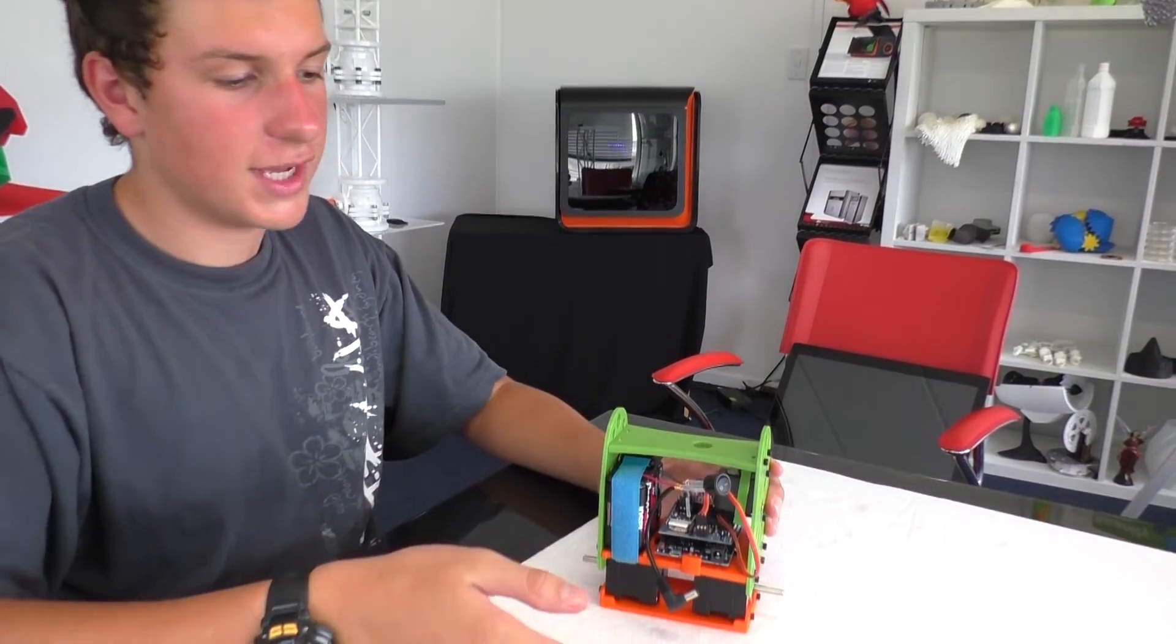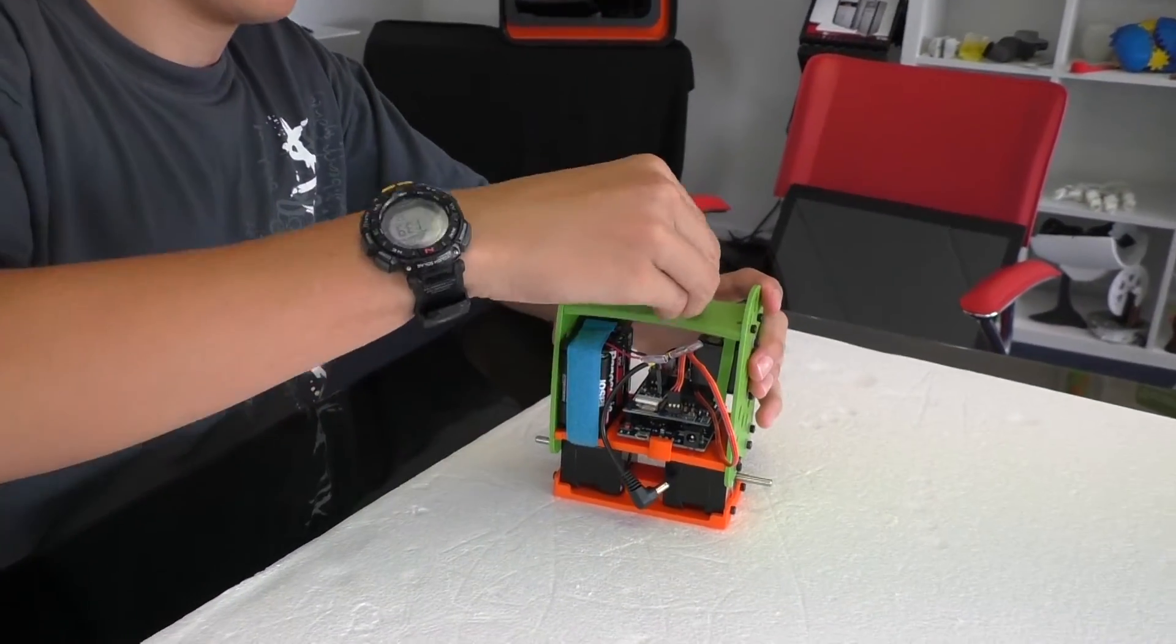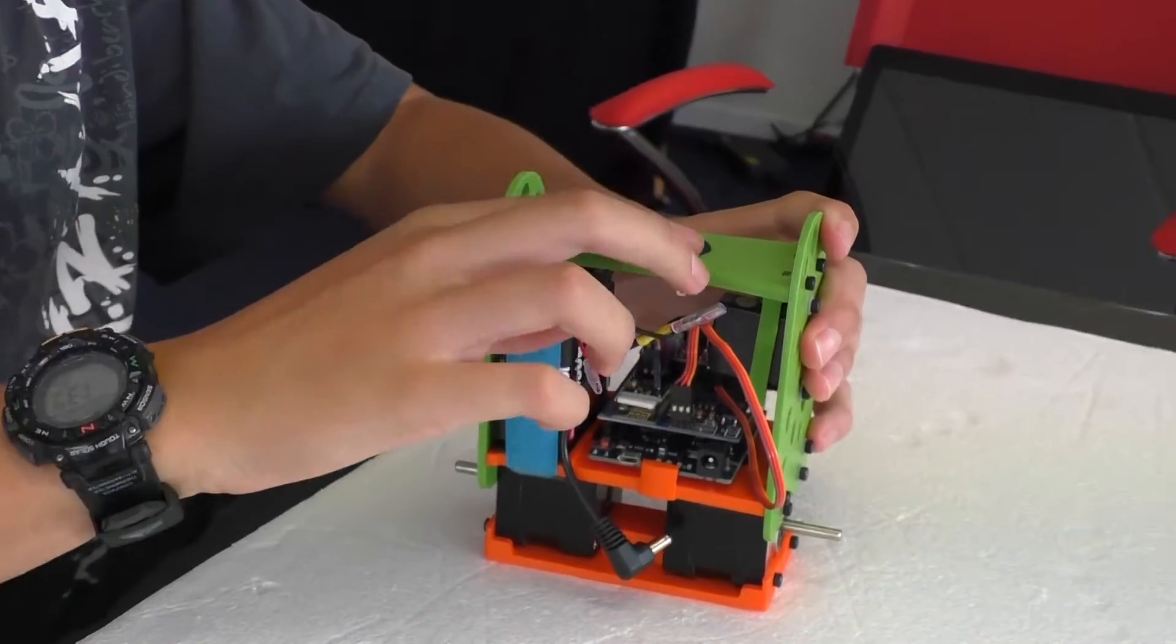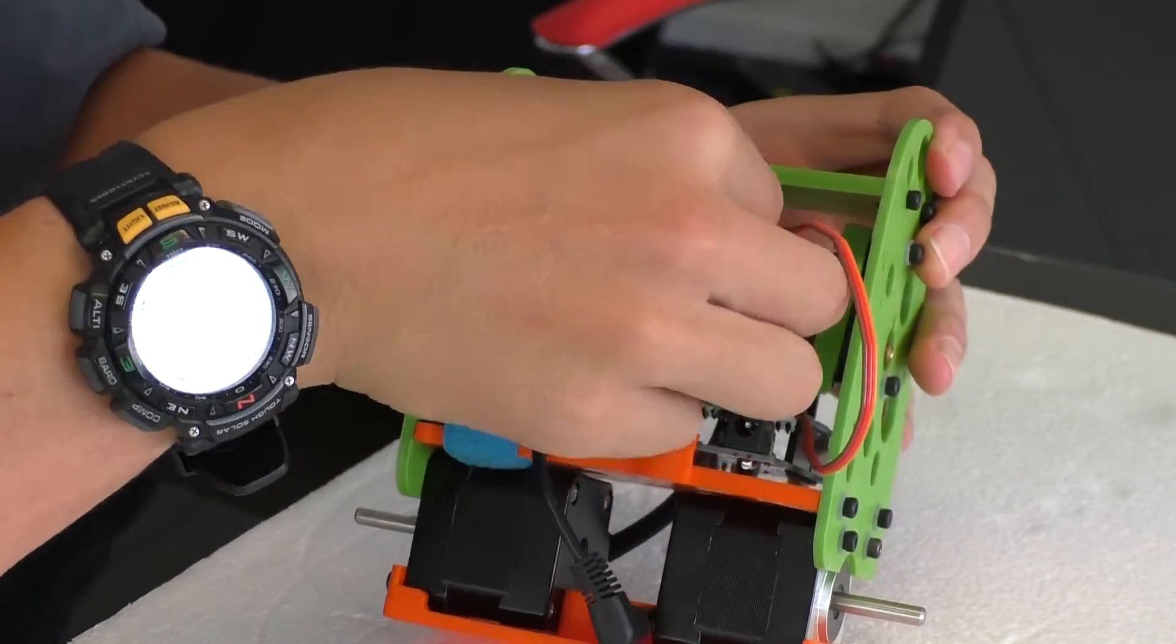We're getting to the final stage of our Balanced Bot project. Now, we have to remove the switch. Clip it nicely in the top. Make sure it's in the off position, and then plug back in the wires.